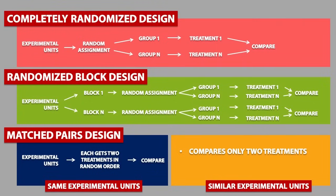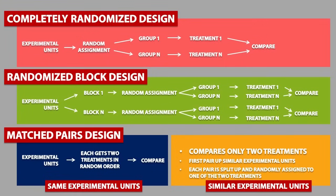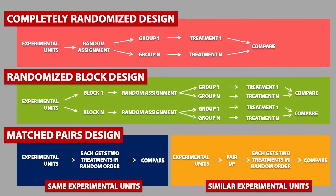If you are using similar experimental units, we first pair up similar experimental units, then each pair is split up and randomly assigned to one of two treatments. This is what the simplified diagram would look like.